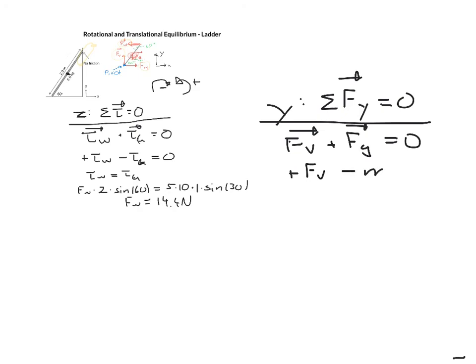Therefore my vertical force is mg which is equal to 5 times 10 is 50 newtons.